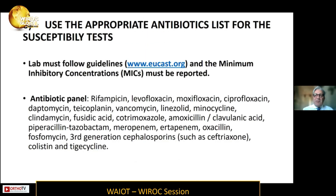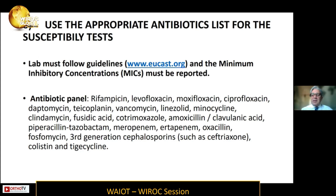Point eight is very relevant, especially given the increasing problem of antibiotic resistance. Any lab must use guidelines — specifically the EUCAST guidelines — and any lab must report the minimal inhibitory concentration in the report. Any lab must identify the proper antibiotic panel based on regional or country resistance. We need to use at least one antibiotic per class, and based on the resistance profile in your country, it may be necessary to use more than one antibiotic per class.